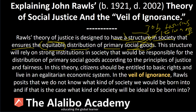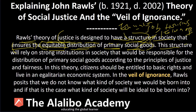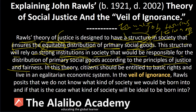Rawls' theory of social justice is designed to have a structure in society that ensures the equitable distribution of primary social goods — jobs, housing, economic opportunities, and education. This structure relies on strong institutions, which are very critical in the dispensation of these social goods. These strong institutions in society are responsible for the distribution of primary social goods according to the principles of justice and fairness.